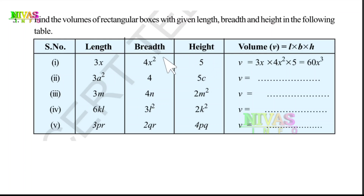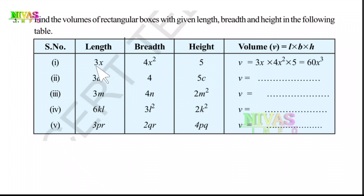First we check the signs — plus or minus — then we do multiplication. For the same variable terms, X into X gives X squared, and X squared into X gives X cubed. First problem: coefficient 3 into 4 is 12, 12 into 5 is 60. Then X into X into X gives X cubed. So the volume is 60X³.